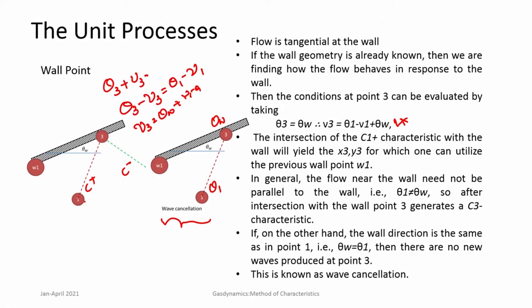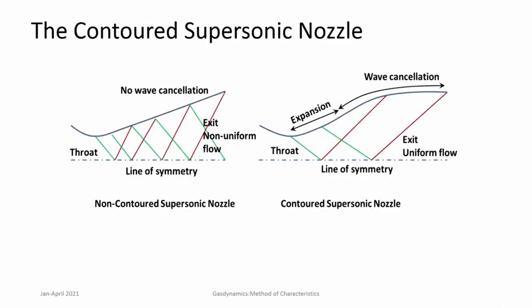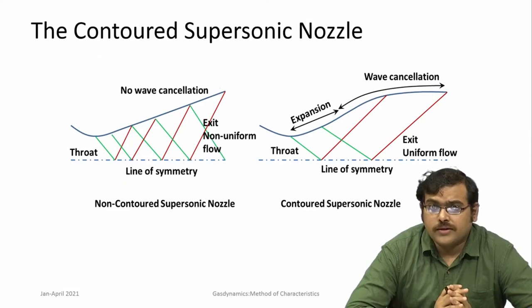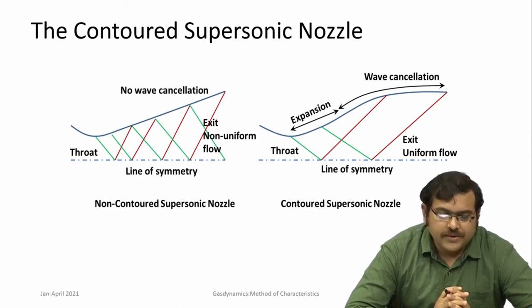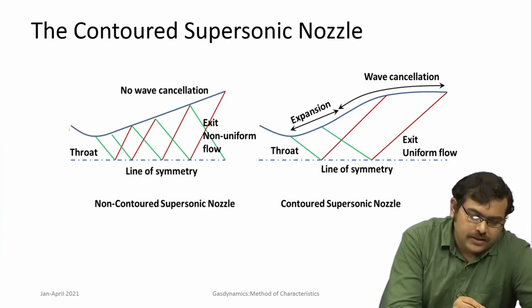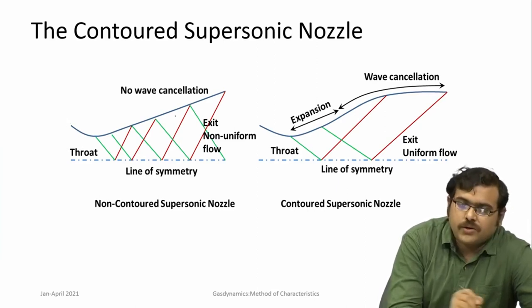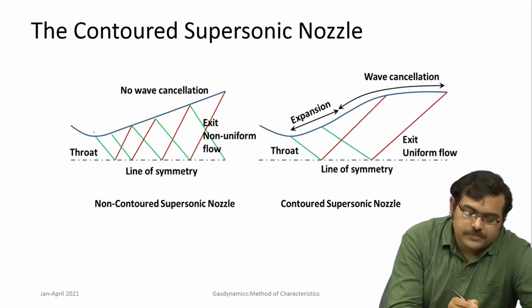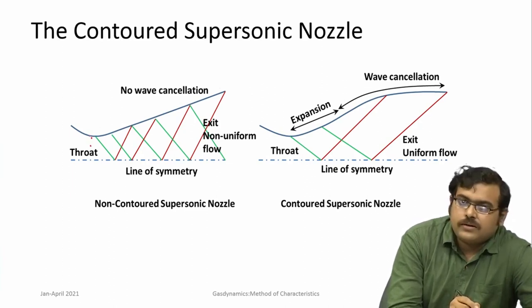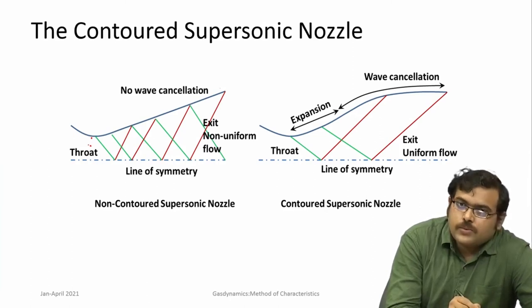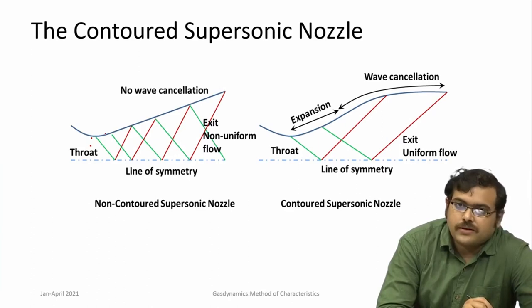This method is applied extensively for the design of supersonic nozzles — particularly contoured supersonic nozzles. For any arbitrary shaped convergent-divergent nozzle, the subsonic portion is made smooth, then there is the throat where Mach number 1 is achieved. After that, a divergent section accelerates the flow to supersonic velocities.